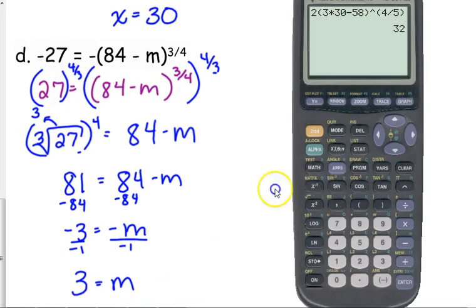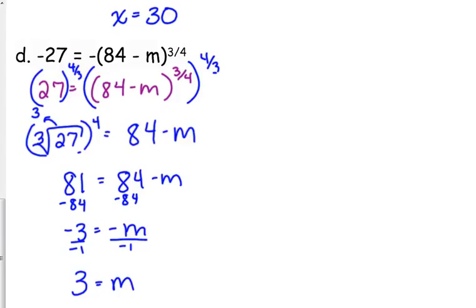Again, do a little check. Negative parentheses, 84 minus 3, raised to the 3 over 4. That gives us negative 27.